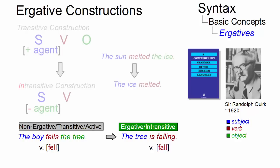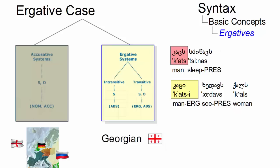By the way, the term ergative is also used to draw a distinction between the case marking of the subjects of intransitive and transitive verbs in particular languages. The Caucasian languages, for example Georgian, typically use ergative case systems.